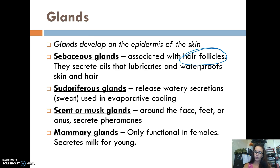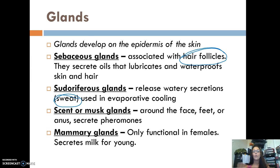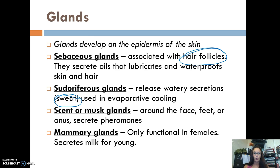Sudoriferous glands release watery secretions known as sweat, which helps cool down the body. Scent or musk glands are located around the face, feet, or anus, and they secrete pheromones, which are really important for reproduction and establishing territory. Finally, the most important are the mammary glands, which are only functional in females — this is how mammals support and feed their young.